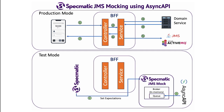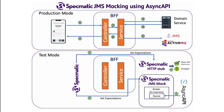First, we set expectations on the JMS mock, describing the messages that it is expected to receive. Then, we also set expectations on Specmatic's HTTP stub, which uses the open API specification for the application's HTTP dependency or the domain service. If you wish to learn more about contract tests and how to stub out HTTP dependencies using open API specifications and Specmatic, please check out other videos on this channel.